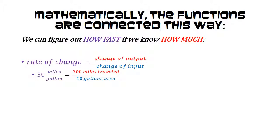For example, we know that if we're getting 30 miles to the gallon in a car, that might be calculated by noting that the output of the car, the miles traveled, has changed by 300 miles, and the input, the number of gallons of gas used, has changed by 10.